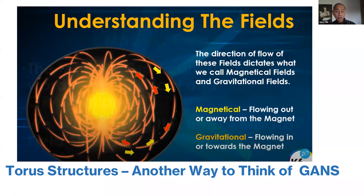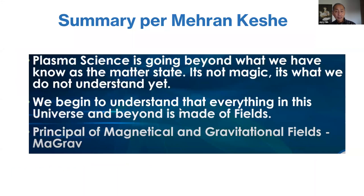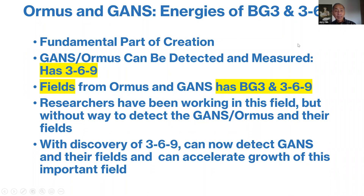This brings you back to Walter Russell's vortex in, vortex out for creation and decay. So in summary per Keshe: plasma science is going beyond what we have known as the matter state. It's not magic — it is what we do not understand yet. We begin to understand that everything in this universe and beyond is made of fields — principally magnetic and gravitational fields, or MAGRAV. Ormus and GANs have the 3-6-9 energies, and anytime you have a torus structure and all the symbols associated with it, you find the 3-6-9 energies.